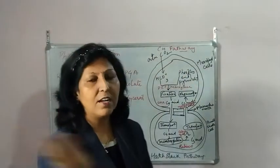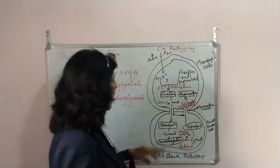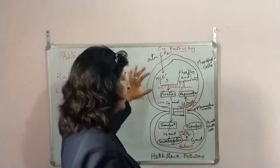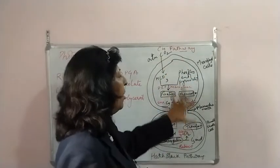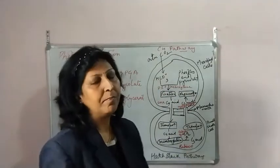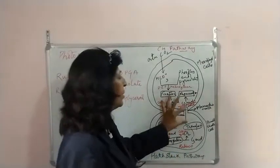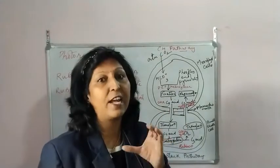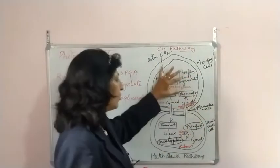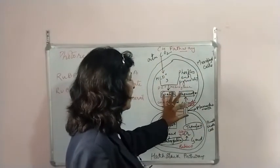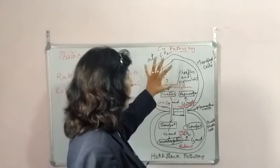When we cut a section of a maize or sorghum leaf — a C4 plant — we see that the mesophyll cells are there first, and then we have the bundle sheet cells. The connection between mesophyll cells and bundle sheet cells is plasmodesmata, which is the pathway connecting one cell to another.